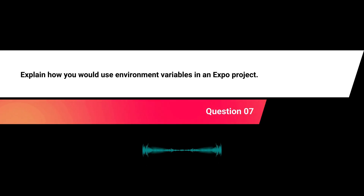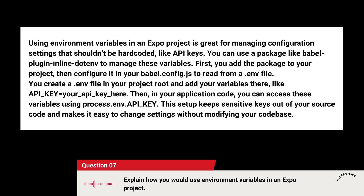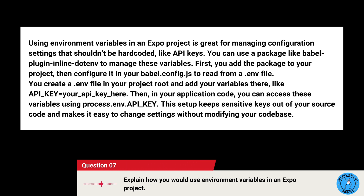Explain how you would use environment variables in an Expo project. Using environment variables is great for managing configuration settings that shouldn't be hard-coded, like API keys. You can use a package like babel-plugin-inline-dotenv to manage these variables. First, add the package to your project, then configure it in your babel.config.js to read from a .env file. Create a .env file in your project root and add your variables there, like API_KEY=your_api_key_here. In your application code, access these variables using process.env.API_KEY. This keeps sensitive keys out of your source code.